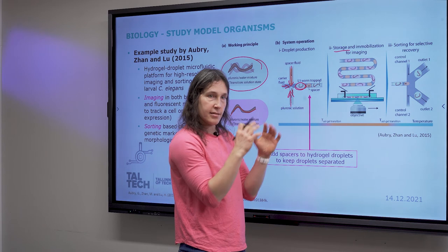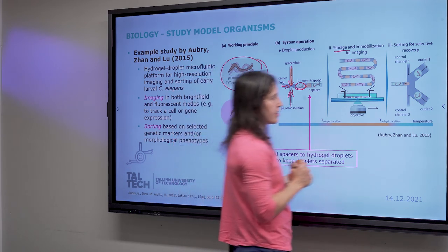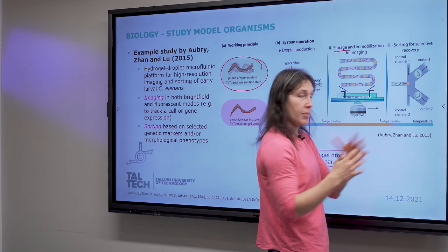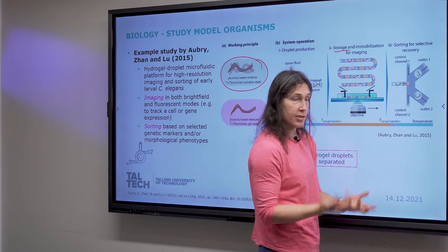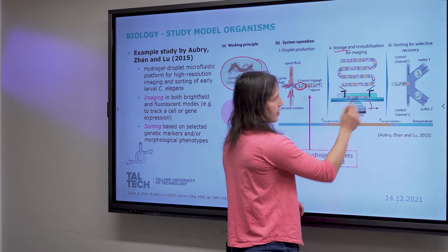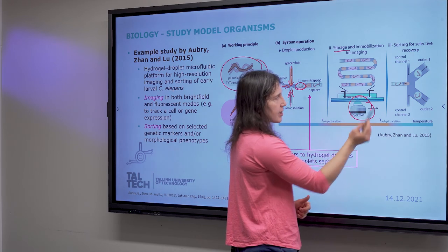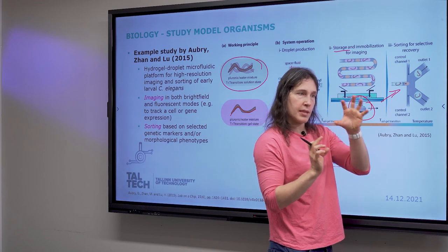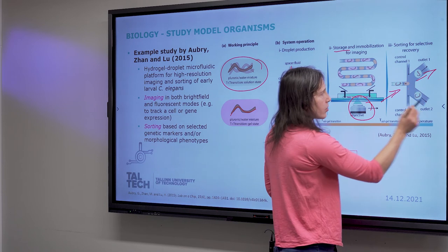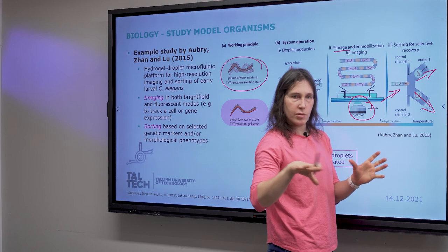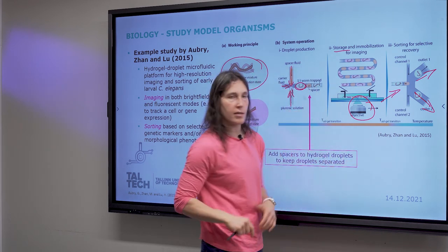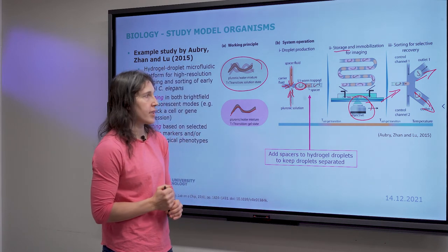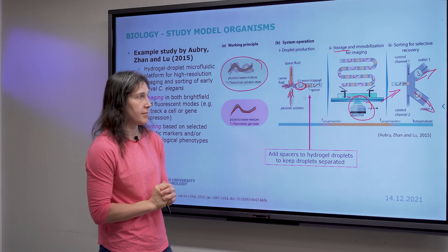They can look at the worm while it's standing still, which is very nice. Then as they change the temperature again, it becomes liquid form and the worm can move around in the droplet freely. During imaging they acquire information, which they can use further on when they want to sort — these worms have something important, we want to keep those; while these didn't have anything we wanted, so they can be discarded. It's a very nice illustrative platform showing how you can use droplets to study actual different species of organisms.